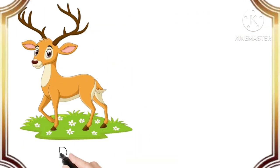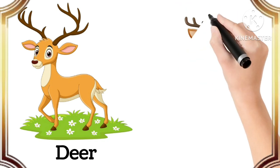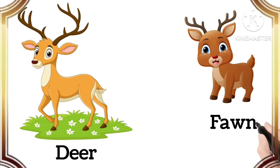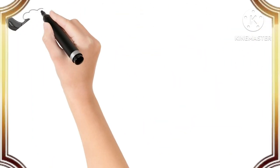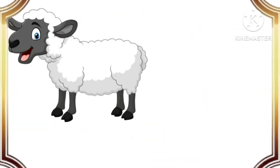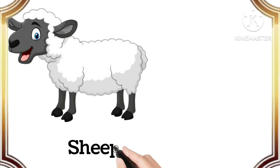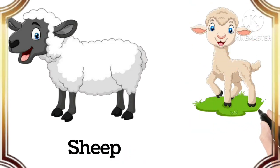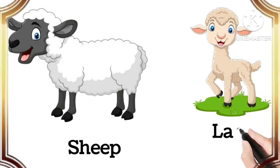Deer. The baby of deer is fawn. Fawn. Sheep. The baby of sheep is lamb. Lamb.